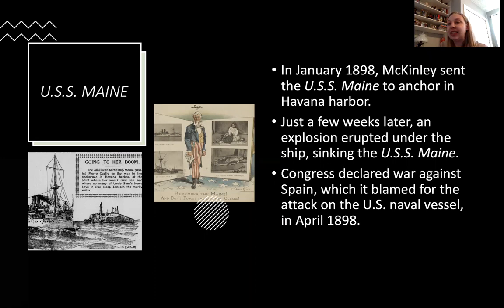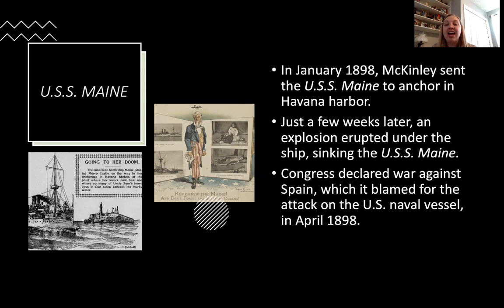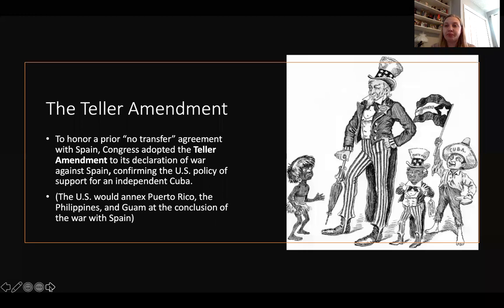The next big event — the one that actually leads Congress to declare war on Spain — comes in January of 1898, when President McKinley sends the USS Maine battleship to anchor in Havana Harbor to keep an eye on the Spanish and the atrocities they're committing on Cuban territory. A few weeks later, the USS Maine explodes and sinks. The United States blames Spain, and Congress immediately declares war in April of 1898.